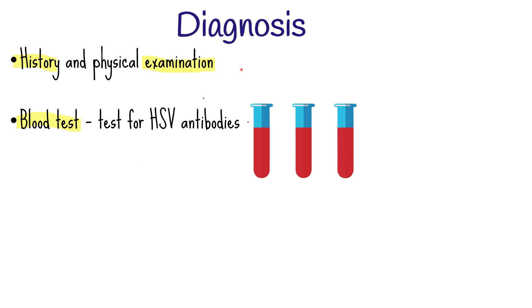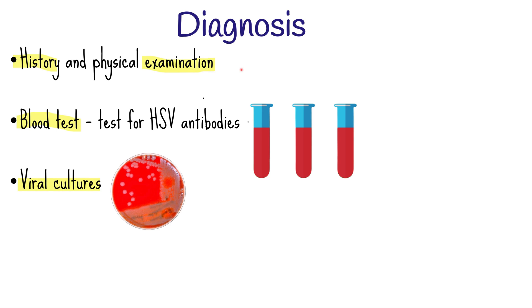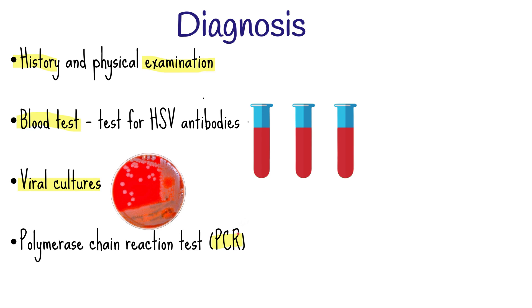The diagnosis of genital herpes is based on proper history, physical examination, and the results of laboratory tests. A blood sample can be taken and examined for the presence of HSV antibodies in order to detect a previous herpes infection. A tissue sample or scrapings of the lesions can be collected for viral culture, and a polymerase chain reaction test can also be done.